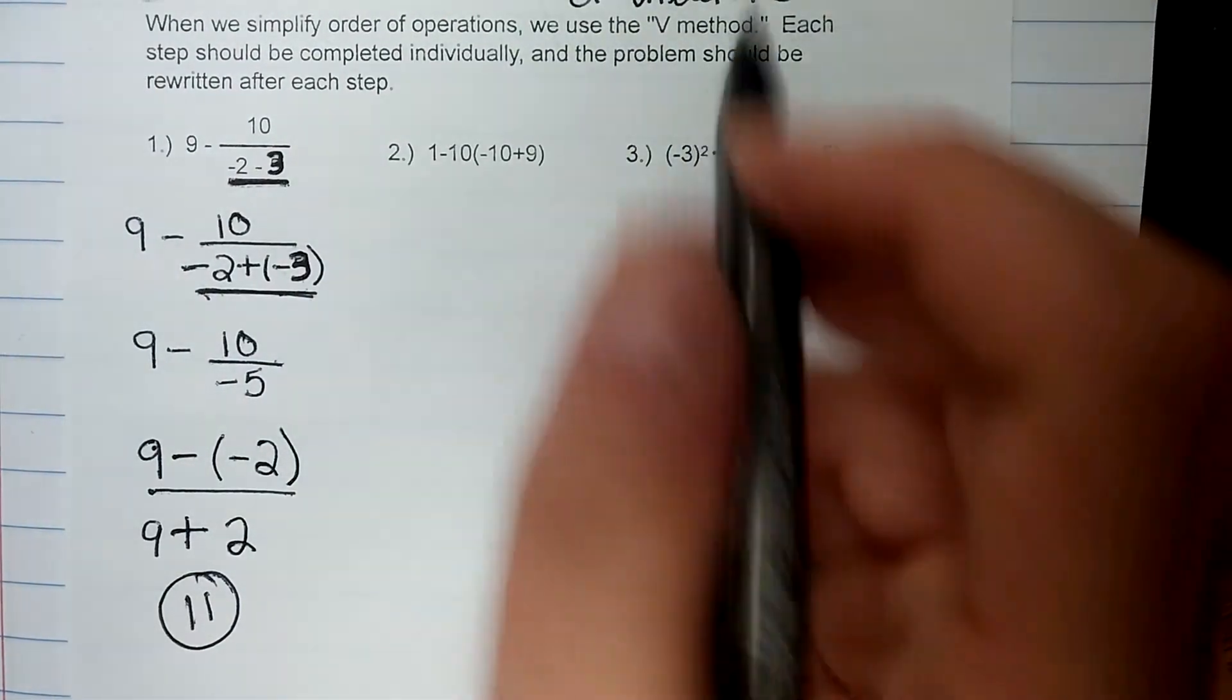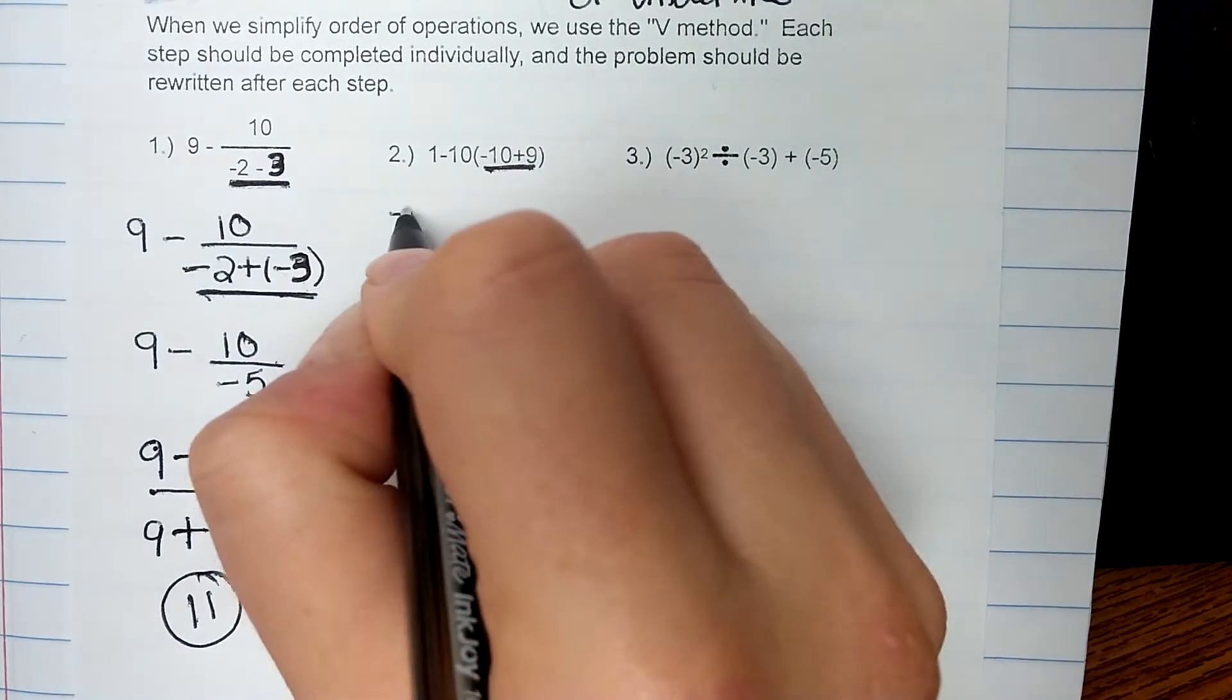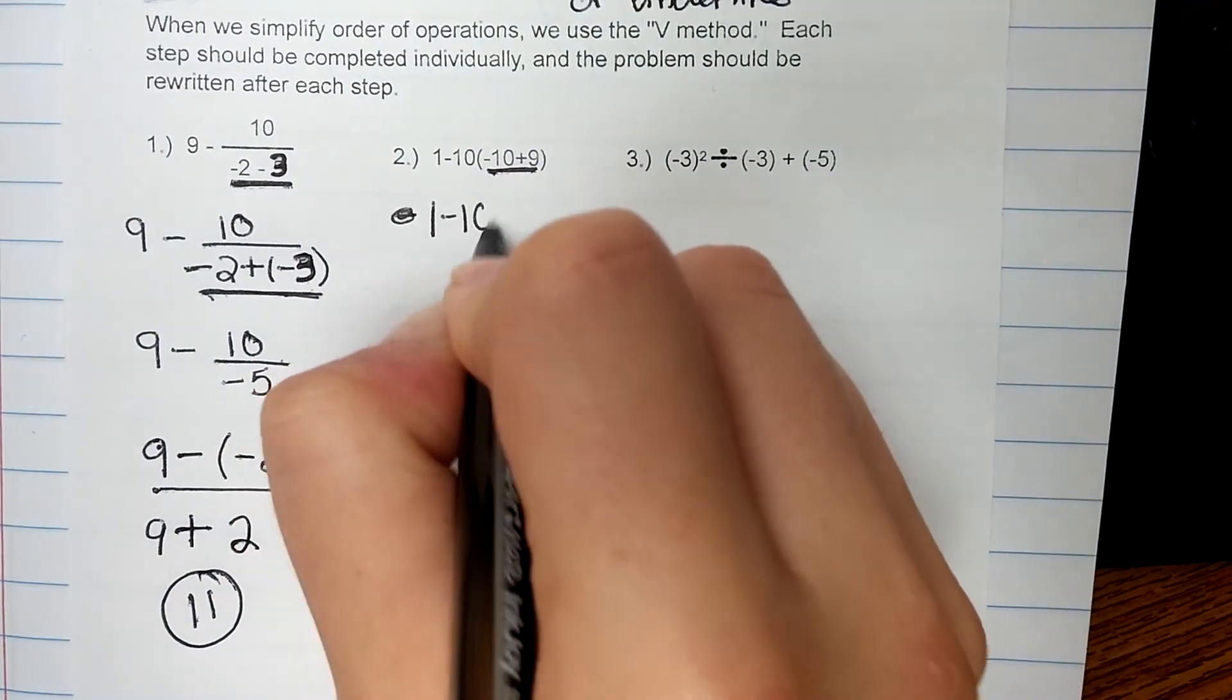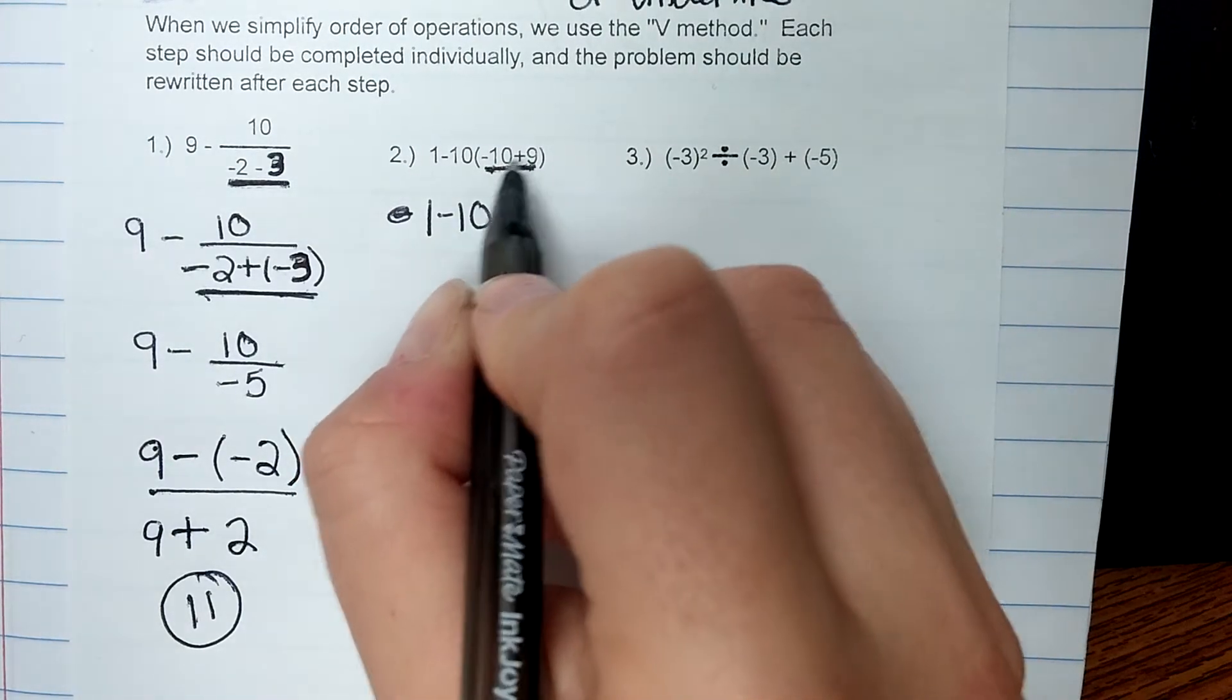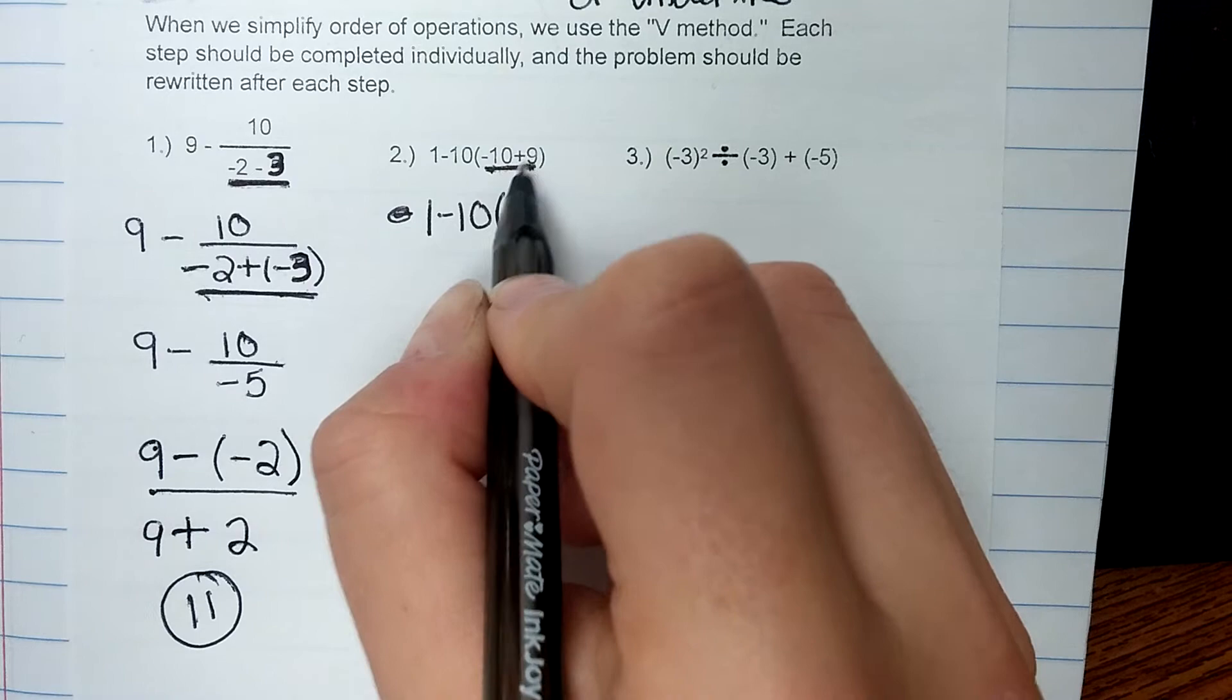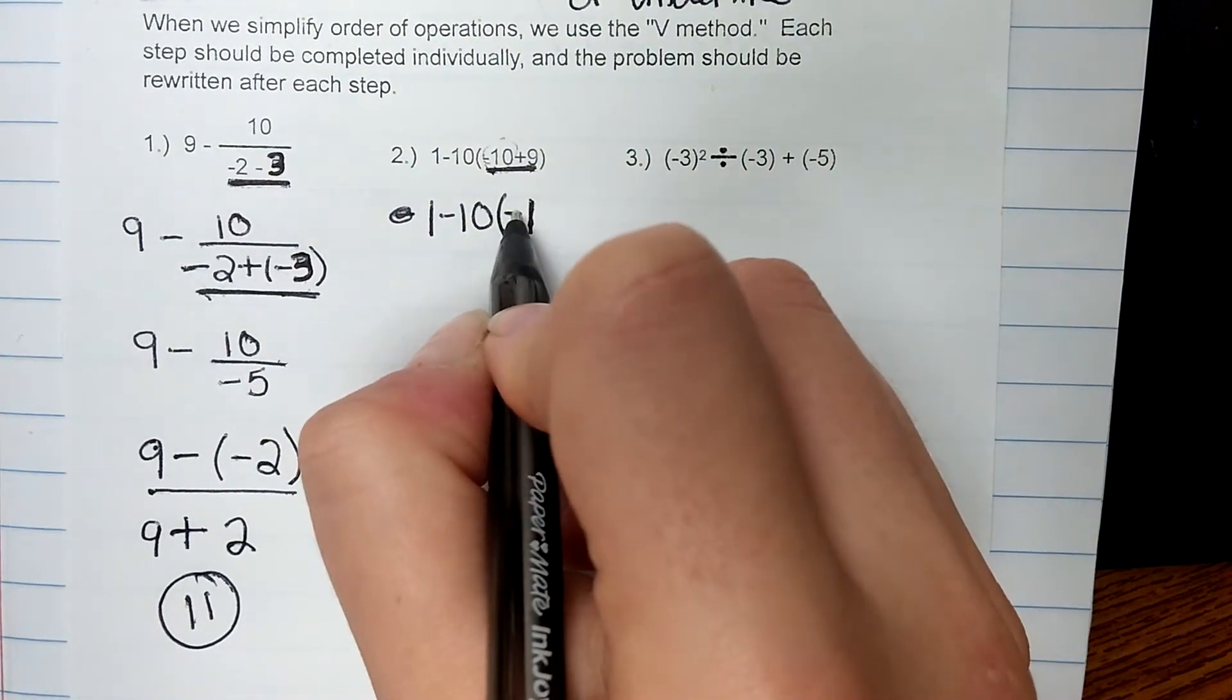So first is grouping symbols, so I'm going to do 10 plus 9. So that gives me 1, 1 minus 10, and then negative 10 plus 9. Signs are opposite, so I'm going to subtract. 10 minus 9 is 1, and 10 has the larger absolute value, so this is going to be a negative 1.